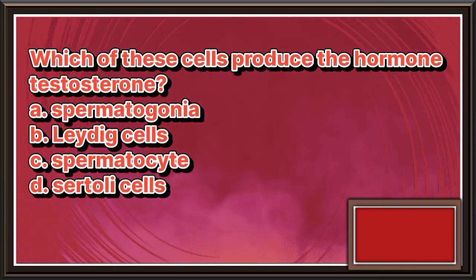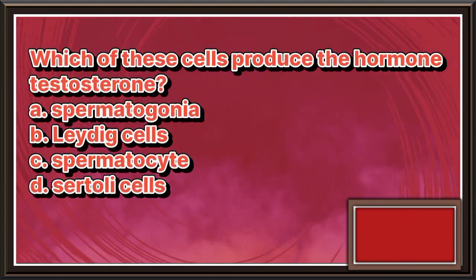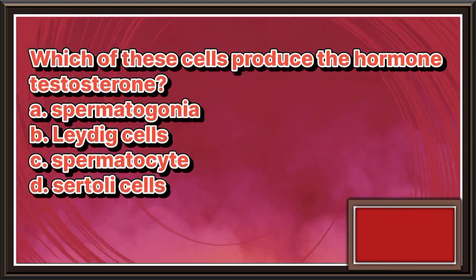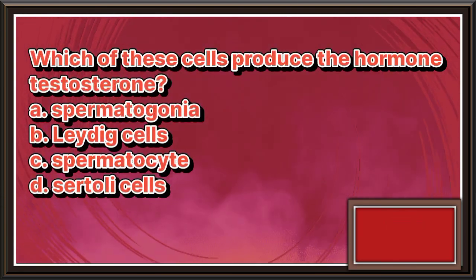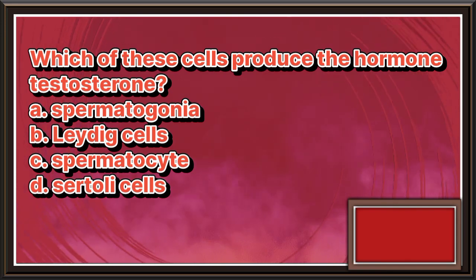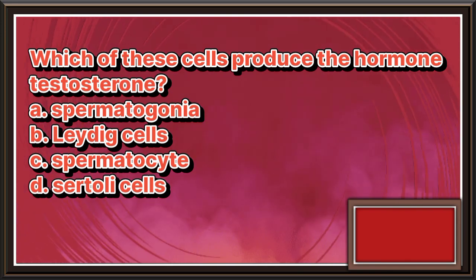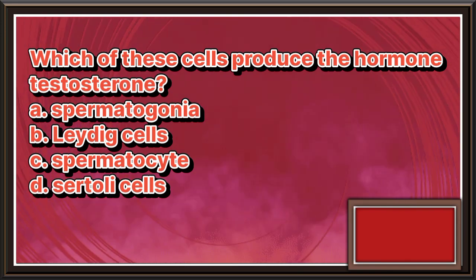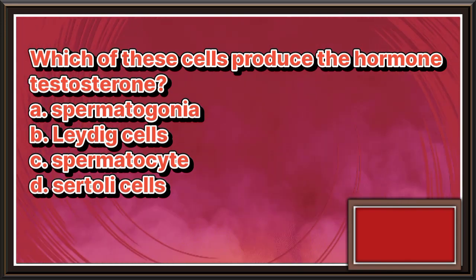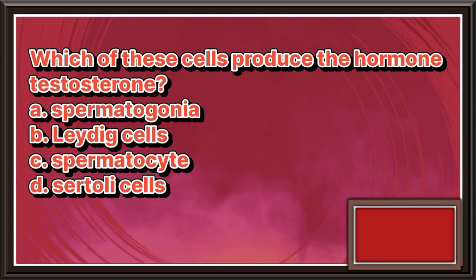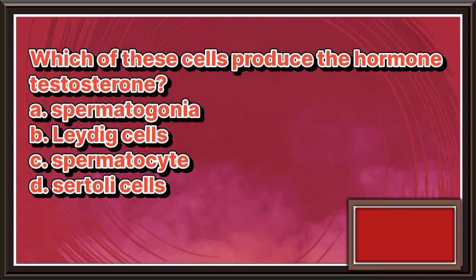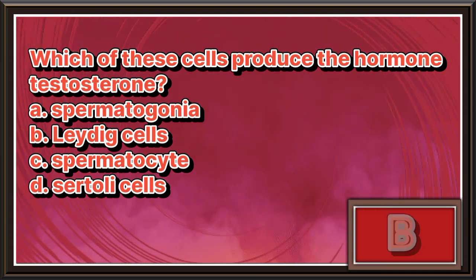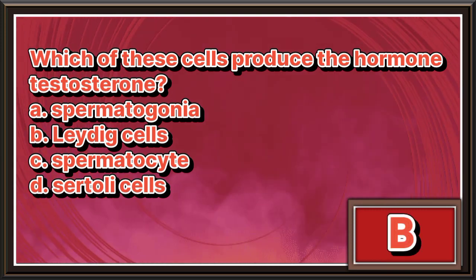Which of these cells produce the hormone testosterone? A. Spermatogonia. B. Leydig cells. C. Spermatogonia. D. Sertoli cells. The answer is letter B.